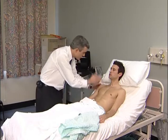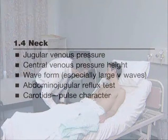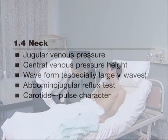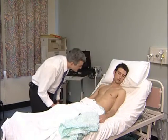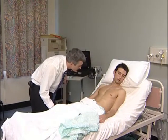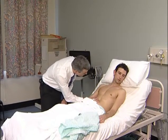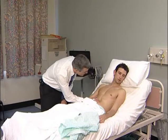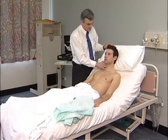Now the important cardiovascular signs found in the neck are assessed. Look carefully at the JVP and attempt to assess its character and height. The normal JVP can be seen to flicker twice during each cardiac cycle. Pressure over the upper abdomen for 15 seconds normally causes a transient rise in the JVP; a more sustained rise is a reliable sign of left or right ventricular failure — the abdominal jugular reflux test.